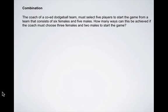The coach of a co-ed dodgeball team must select five players to start the game from a team that consists of six females and five males. How many ways can this be achieved if the coach must choose three females and two males to start the game?